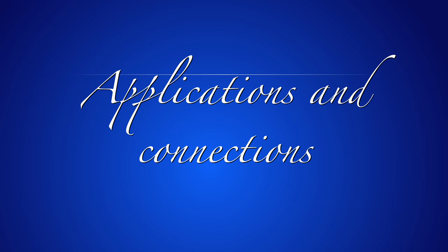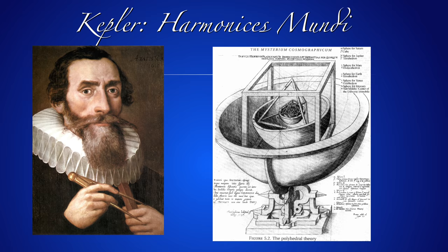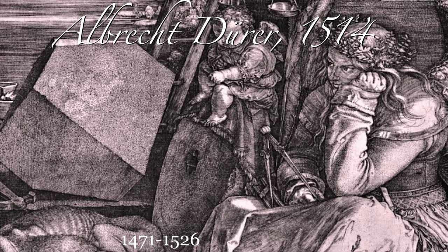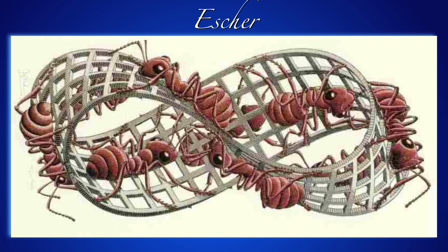Let's look at some applications and connections to other fields. Kepler imagined the planets to be related to platonic solids — this naive Harmonices Mundi picture turned out to be false. A polyhedron makes a cameo in a picture of Albrecht Dürer's Melancholia of 1514. Dürer was a Renaissance artist. A picture of a Möbius strip, a topological icon drawn by Escher — one can see this as a polyhedron with boundary. It has only one side — a very special object in topology.